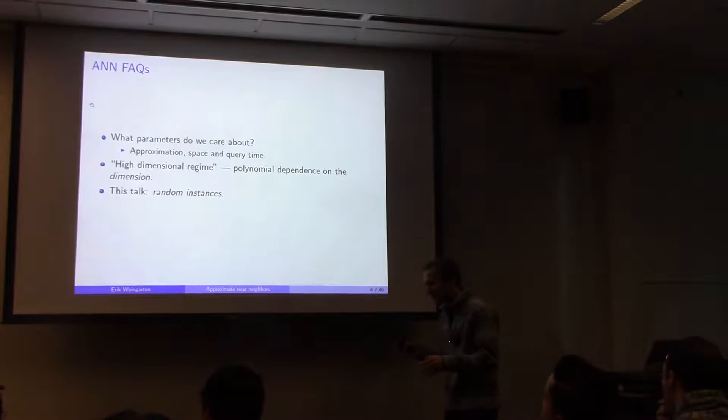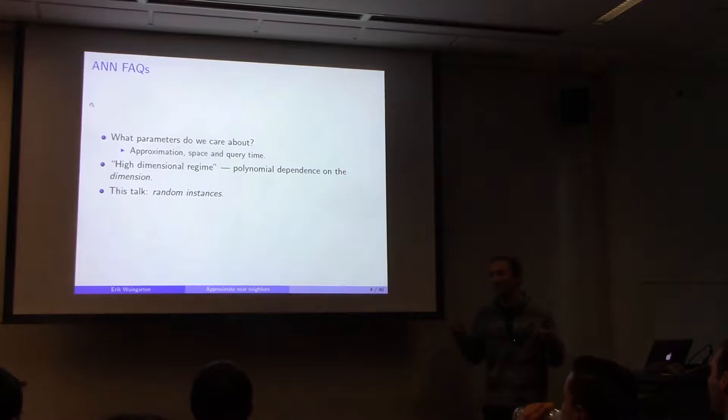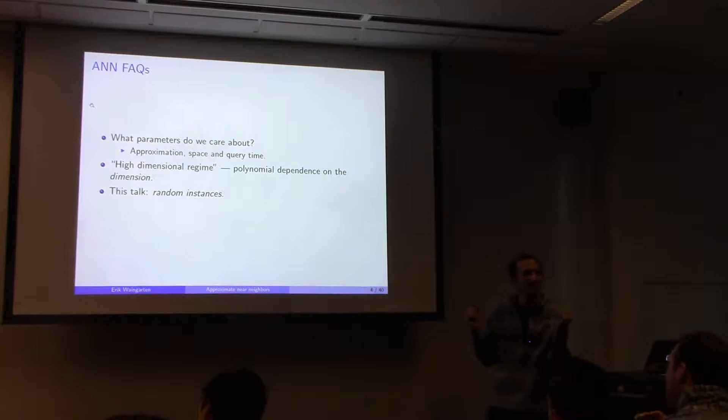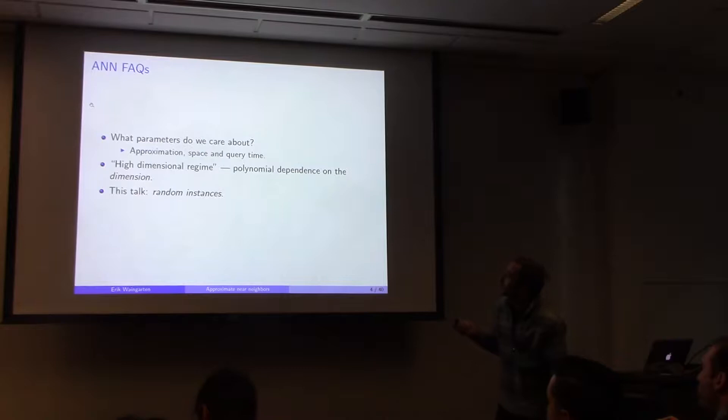For this talk, think about random instances: the dataset is sampled IID from all possible points you'd ever observe, and the query is given by picking a random point within distance one from the dataset. This is a relaxation of the problem.